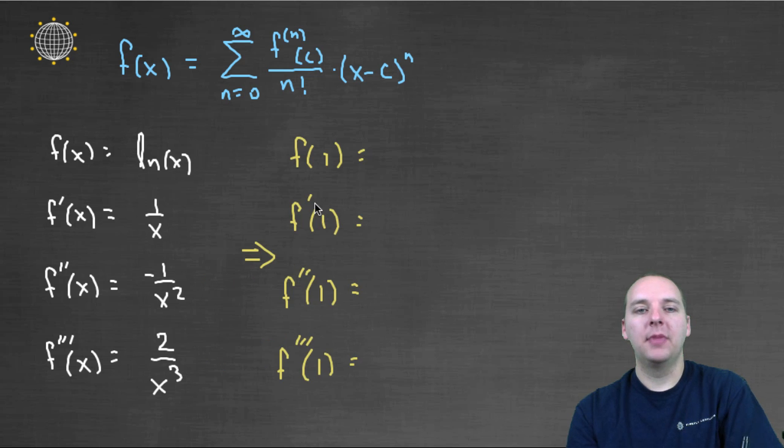I need these guys actually evaluated at the center. So let me take all these guys and plug in one, plug in the center into all these guys. Natural log of one is zero. One over one is one. Negative one over one is negative one. Two over one makes two.